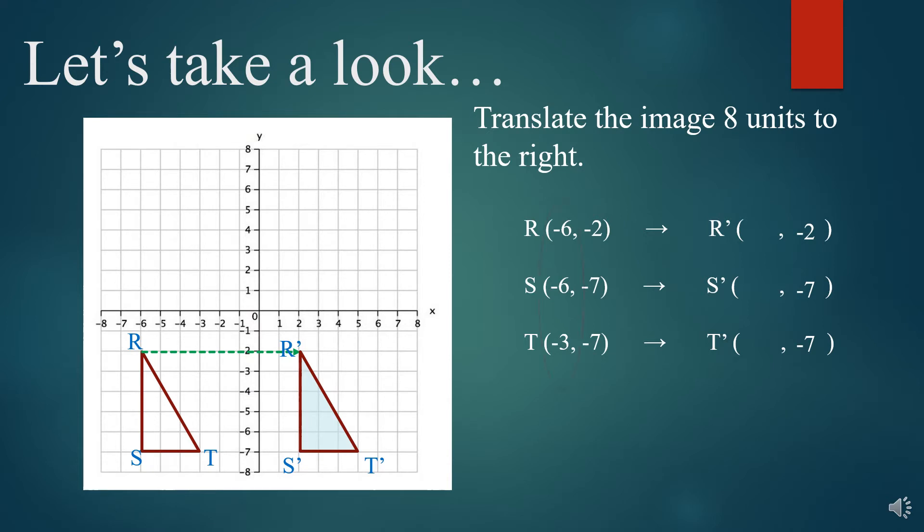It's the X's that we have to worry about. Since we translated it 8 units to the right, that means on the number line we added 8, and so we're going to add 8 to each of those values. Negative 6 plus 8 is 2, same one on the second one, and then negative 3 plus 8 is 5, and there you have it. You have your three new coordinates.